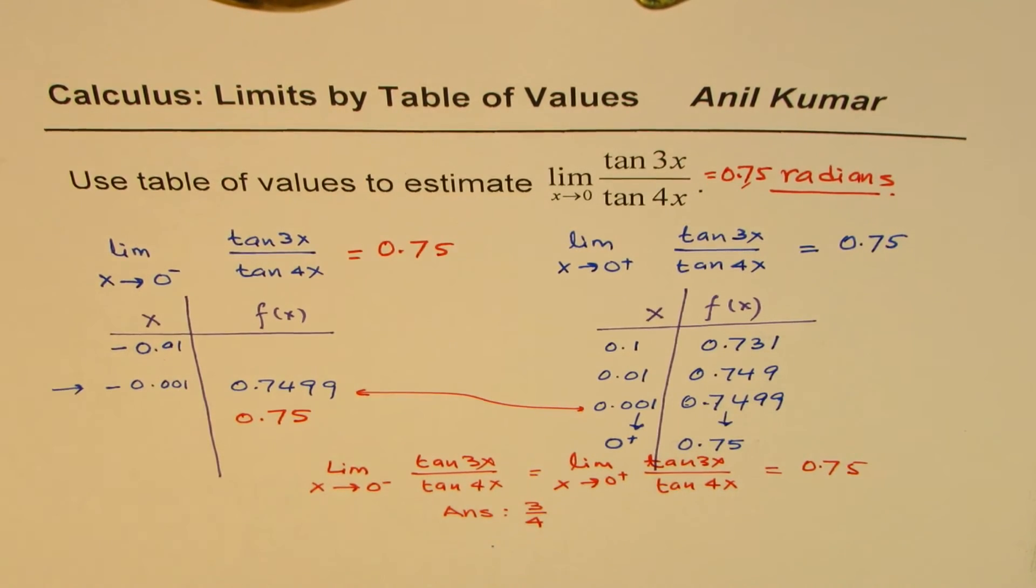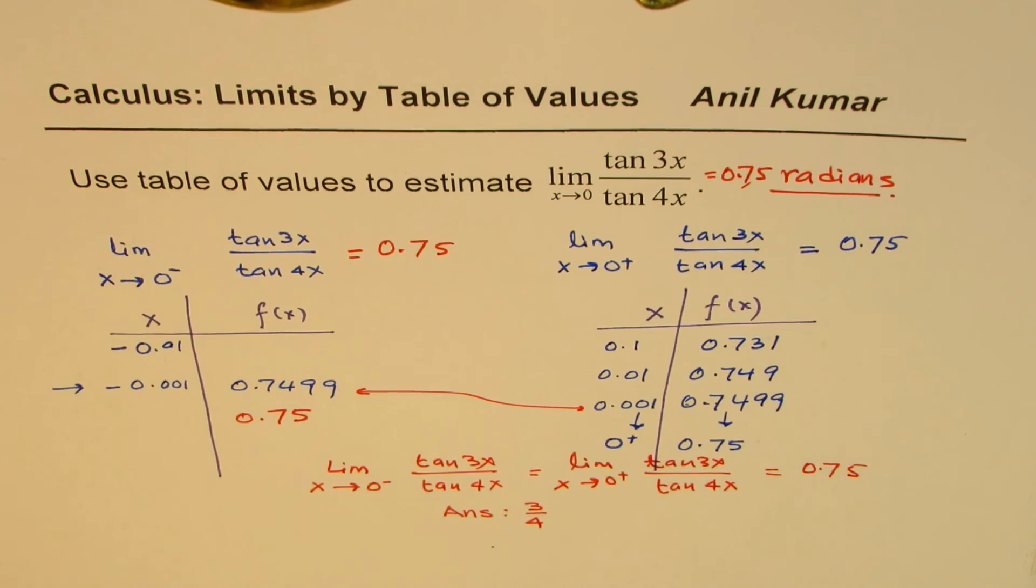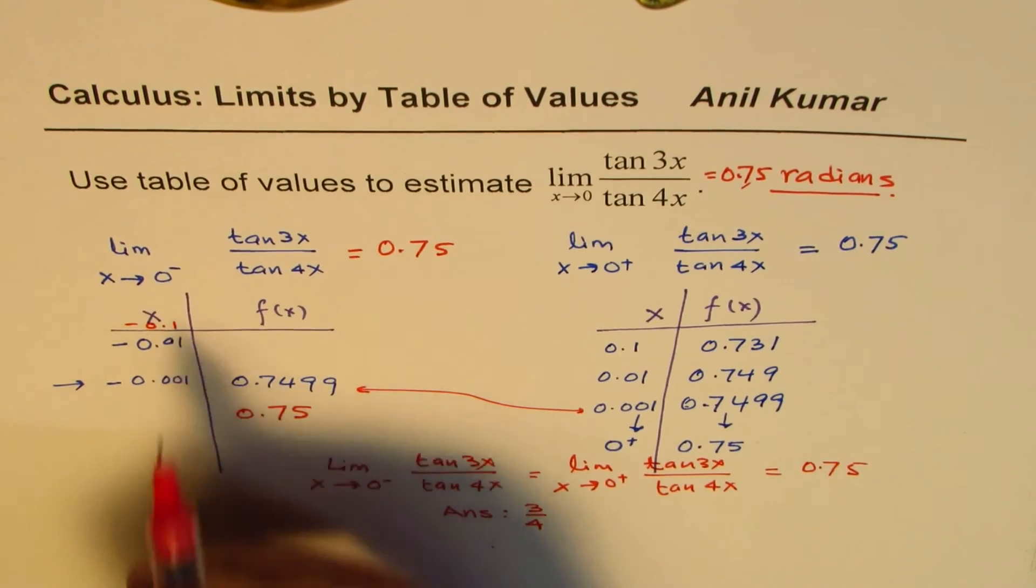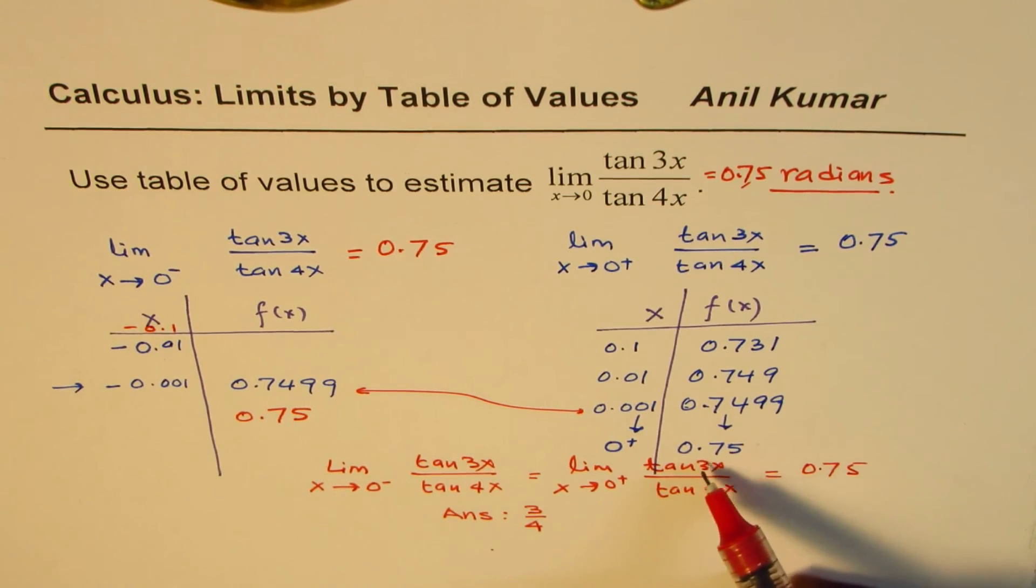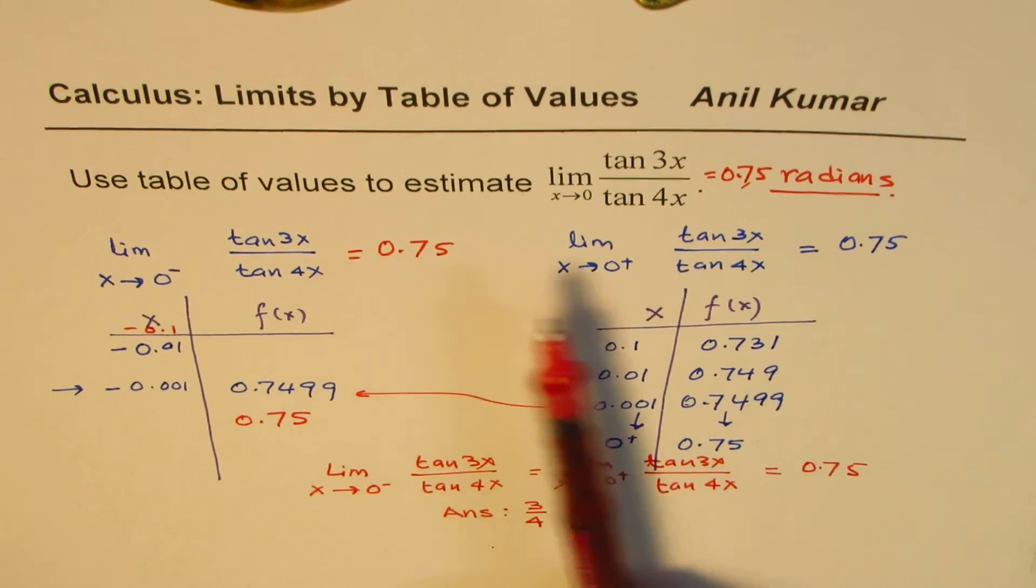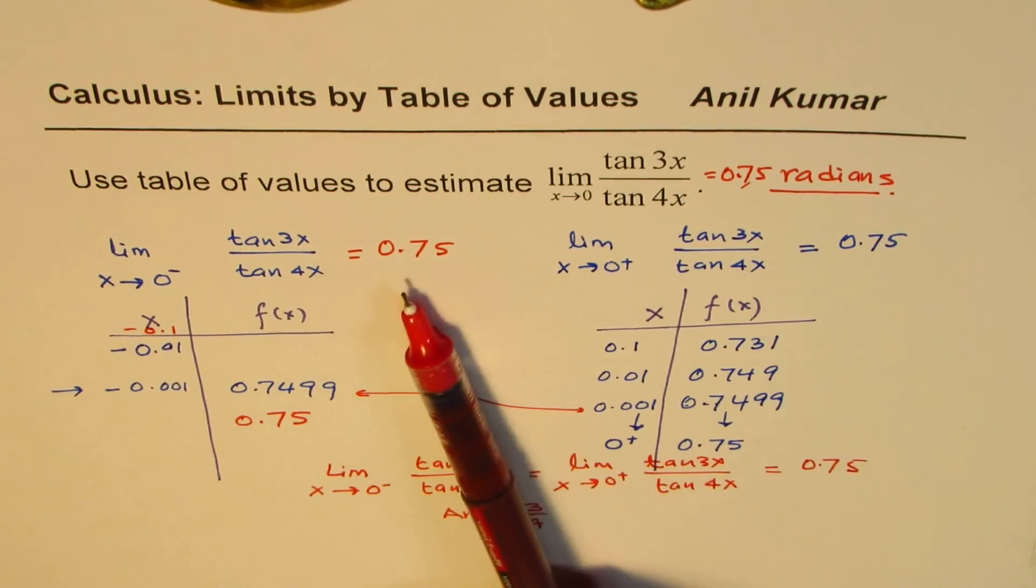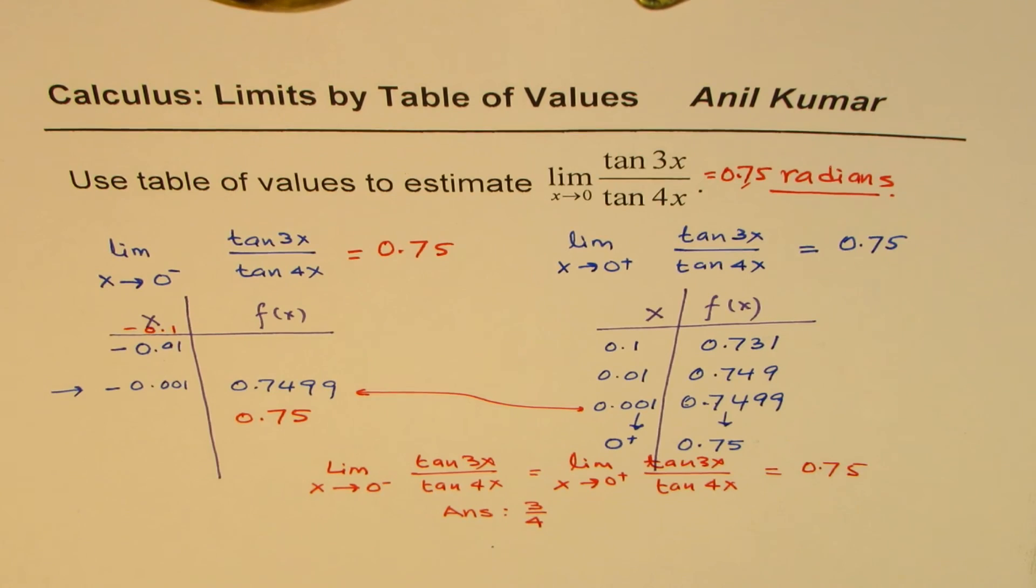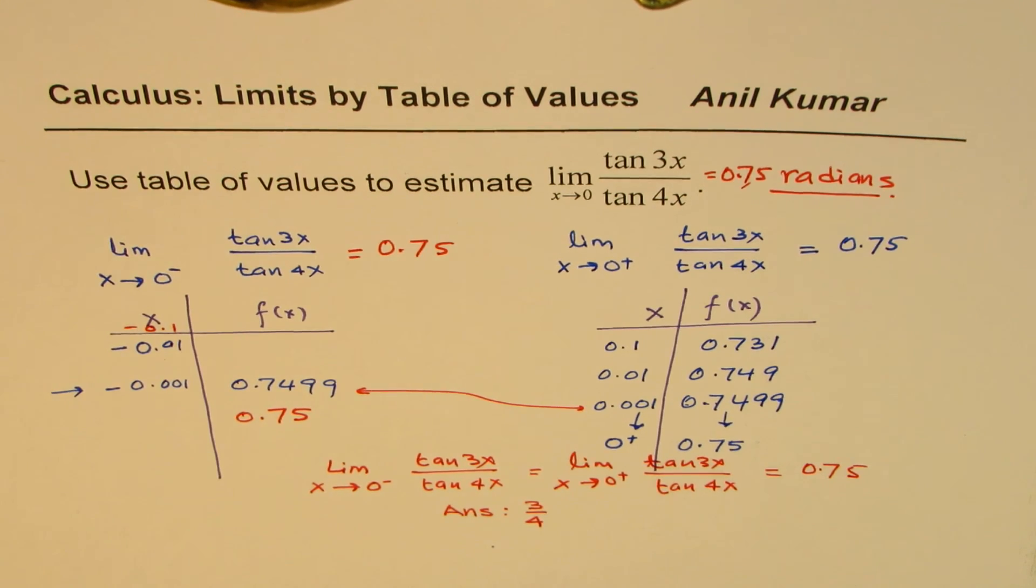So that is how you can find limits using table of values. So as an exercise, complete this table. You can start with minus 0.1, and then you will see that it approaches 0.75. That's the whole idea. I'm Anil Kumar, and I hope you appreciate how we can find limits by using table of values. So if you get the same value, then the limit exists. If we do not get the same value, limit does not exist. That is important to remember. You can always share and subscribe to my videos. Thank you, and all the best.